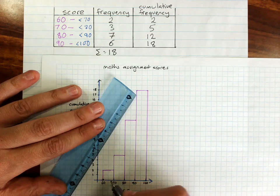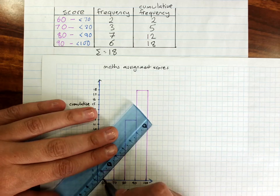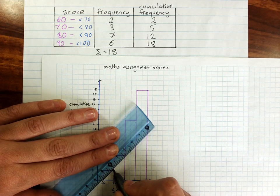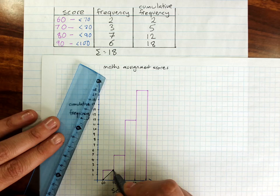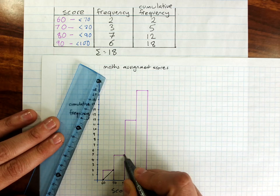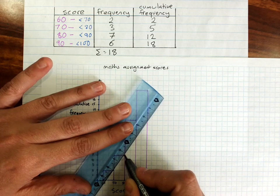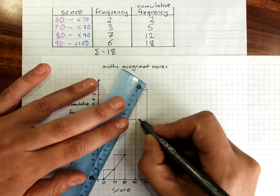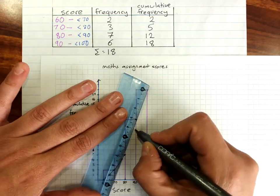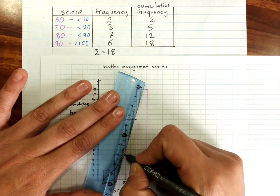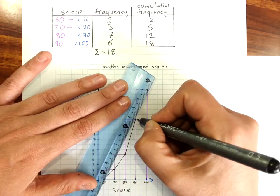So from the bottom of the first column up to very carefully the top right of that column, then up to the top right of this column, up to the top right of that one, and up to the end.